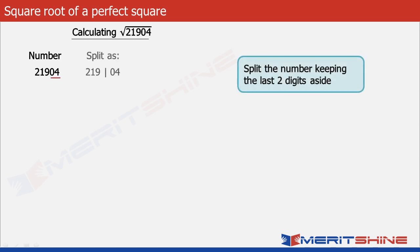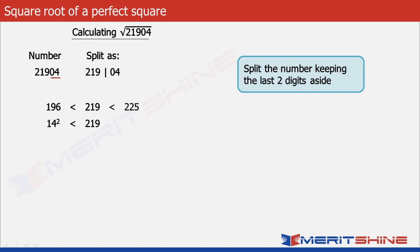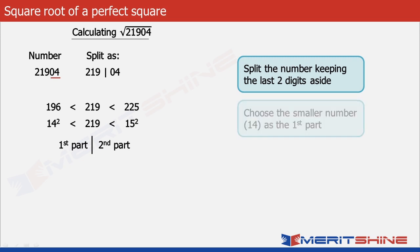So we will get 219 in the first part and 04 in the second. We observe that 219 lies between 196 which is 14 squared and 225 which is 15 squared. The answer would be in two parts. The first part will get the number whose square is smaller, which in our case is 14.